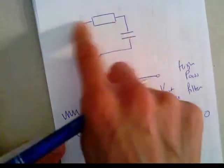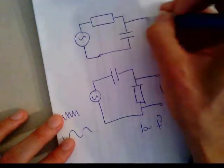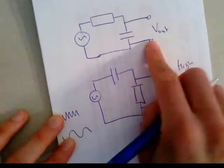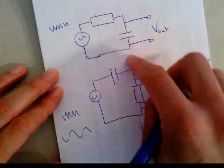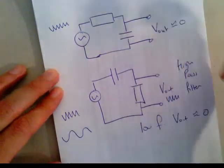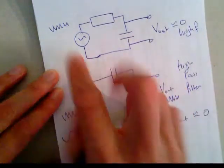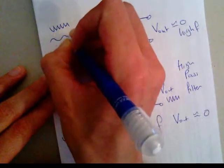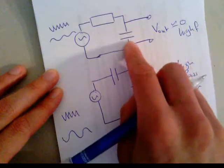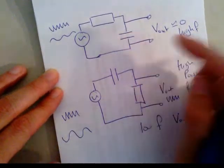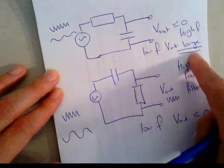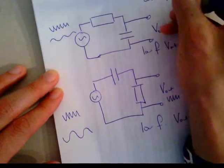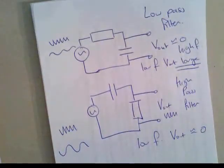This circuit is the same whether the resistor or capacitor comes first — the order doesn't matter. But if you tap your Vout across the capacitor instead, then the reverse happens. At high frequency, the capacitor acts like a short circuit, so Vout is approximately zero. At low frequency, the capacitor has time to charge up and acts like a massive resistor, so Vout is large. So low frequencies pass through — this is known as a low pass filter. And that's the difference between them.